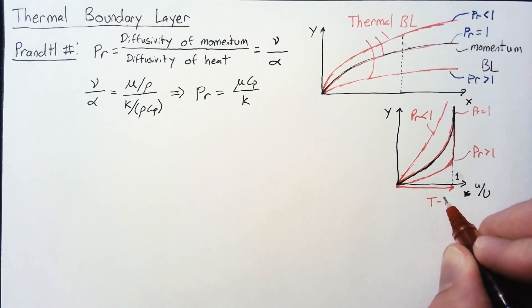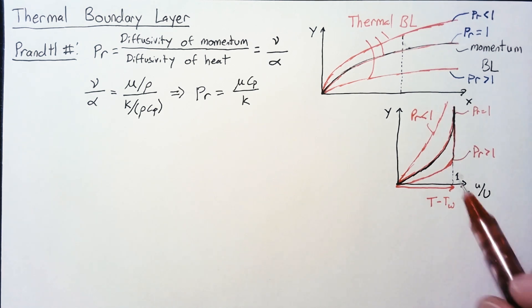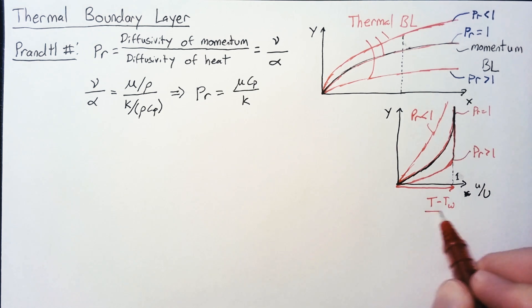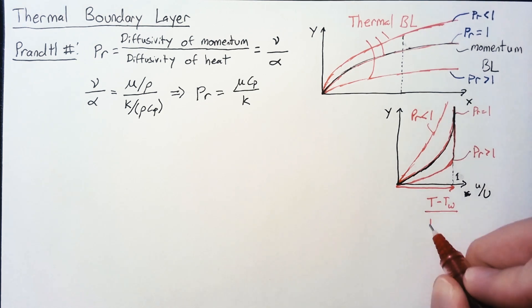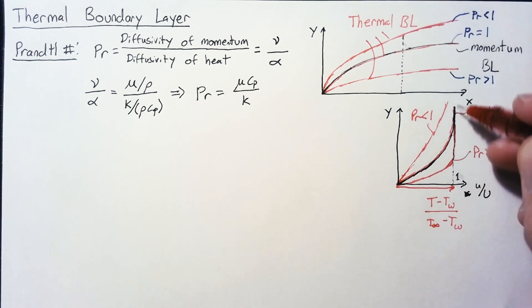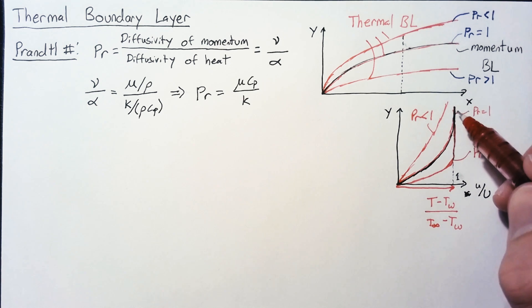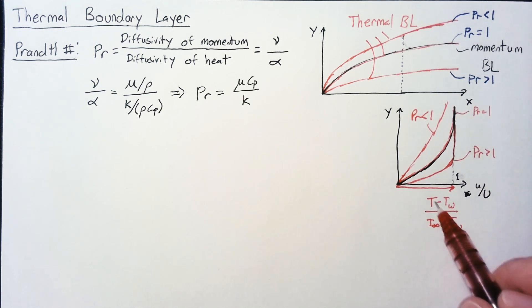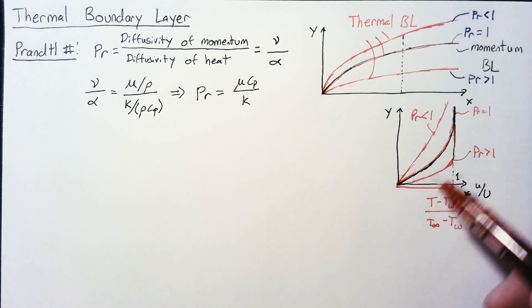We still go to one at the end. As we get to one, that means our temperature is equal to T infinity. So that's a picture of the thermal boundary layer, what it looks like, and what the temperature profile and momentum profile actually look like on that boundary layer.